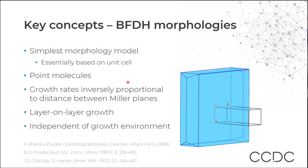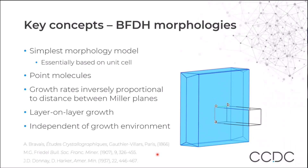The growth rates predicted by the BFDH model are inversely proportional to the distance between Miller planes. You can see from the diagram on the right how this plate-like morphology relates to the unit cell, where we have a long axis along the c-axis. Where the distance between Miller planes is large, we have a very low growth rate along that direction and consequently a large face. You can find more information in the original BFDH citations and the glossary on your handout sheet.